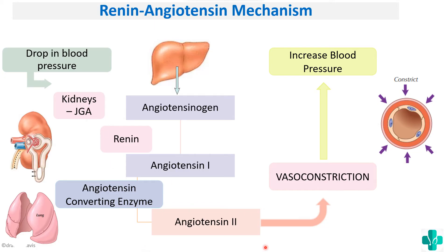In summary: renin converts angiotensinogen to angiotensin 1, angiotensin converting enzyme converts angiotensin 1 to angiotensin 2, and angiotensin 2 causes intense vasoconstriction to restore BP. Conversely, if blood pressure increases, renin will not be produced and angiotensin 2 will not be produced.